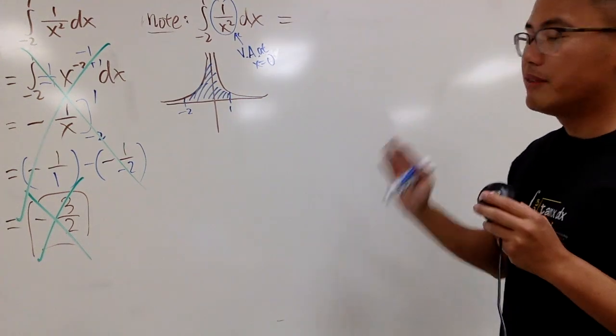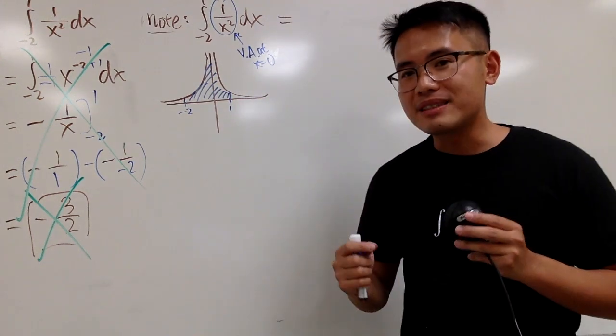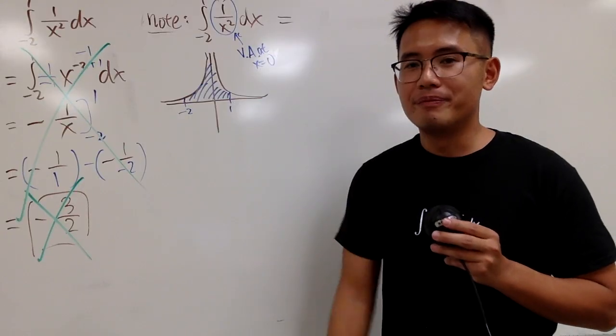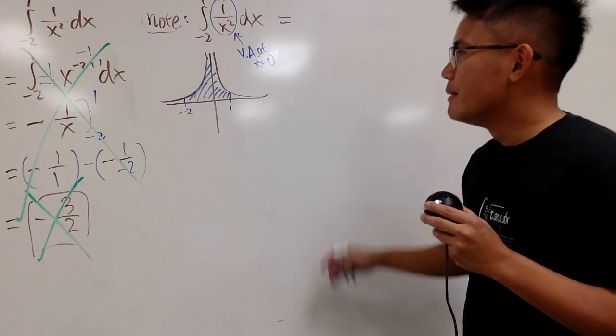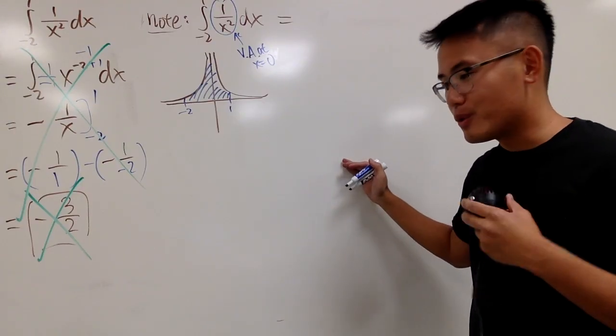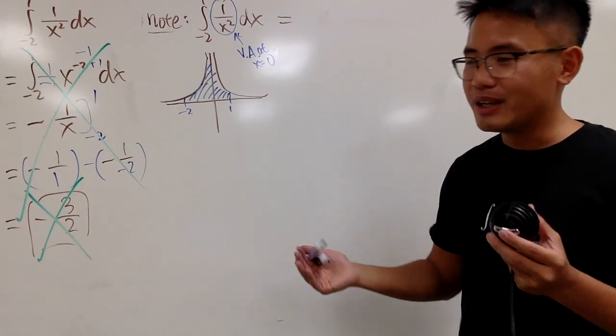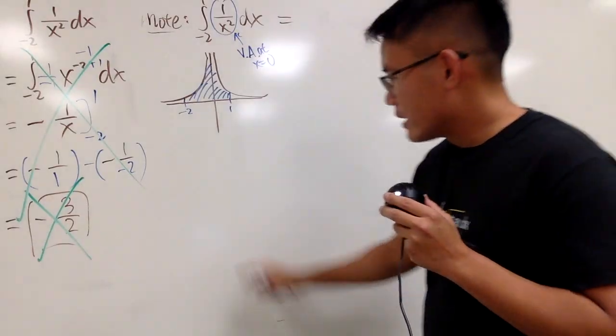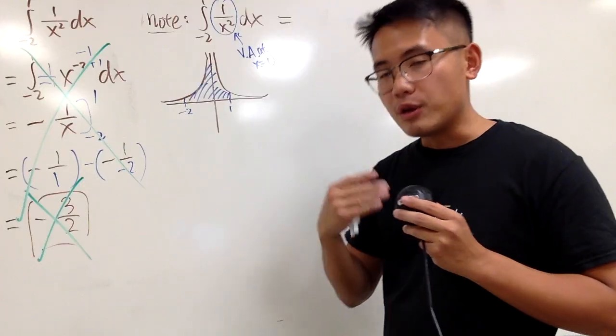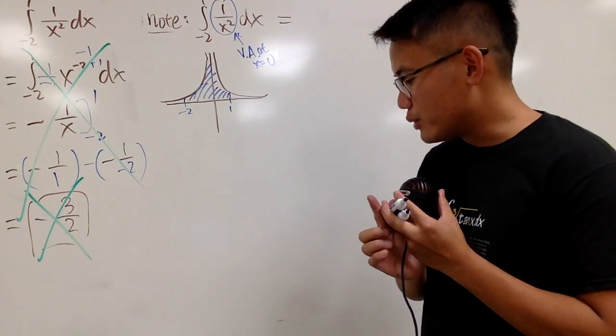And whenever you have this kind of situations, in fact, this is what we call the type 2 improper integral when we have a vertical asymptote. But this is how you are going to make it right if the integral right here actually converges. Let's see. Here is 0. We have to avoid that. So, one of the ways to do it is, of course, take some limits. So,